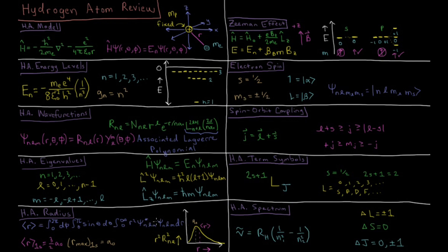If we calculate that expectation value for the 1s orbital, we have 3 halves a naught, 3 halves the Bohr radius. If you calculate where the first derivative equals zero, where we have a maximum in the function, that is at the Bohr radius.